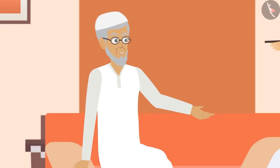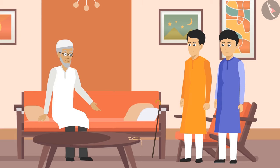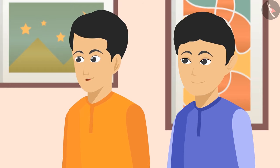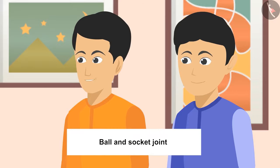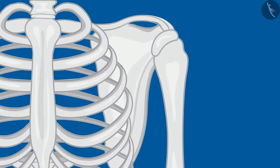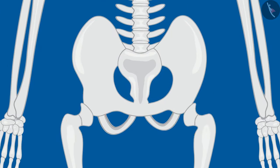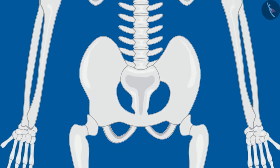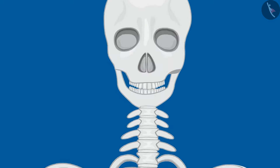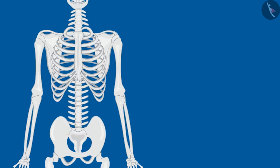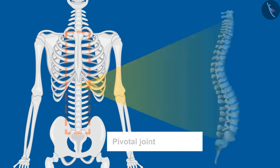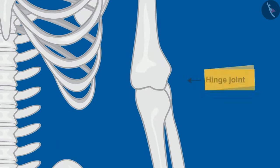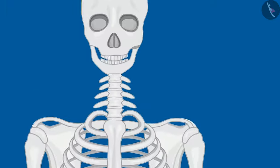'Very well, kids! Now tell me — how many types of joints are there in our body?' 'Chacha ji, there are many types of joints. Like ball and socket joints, through which the bones of our hands are attached to the shoulders and thigh bones are attached to the hips. Pivotal joints keep our head attached to the spinal cord. Other than these, we also have hinge joints and fixed joints.'